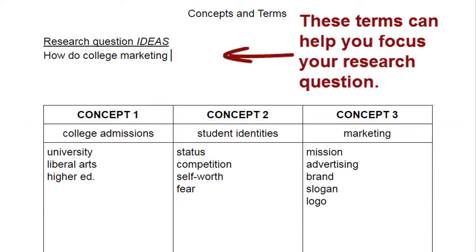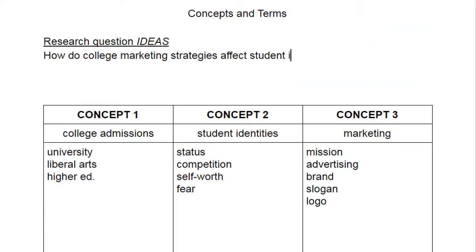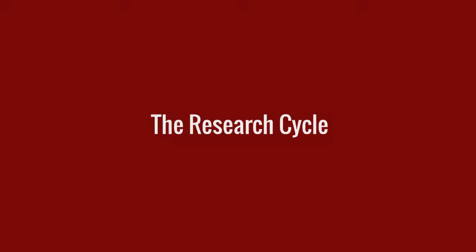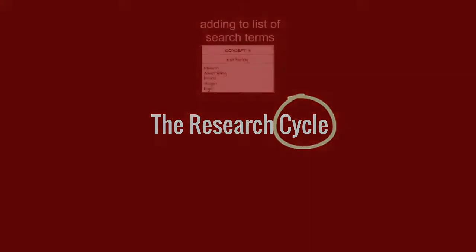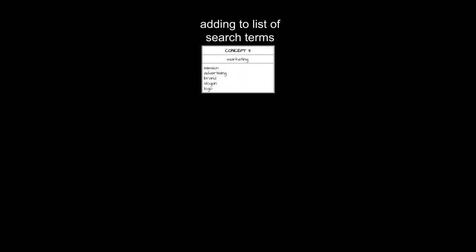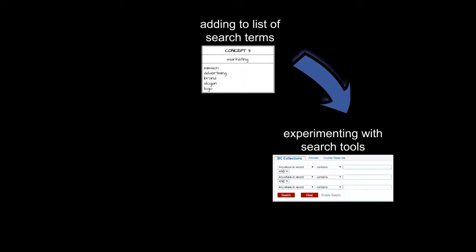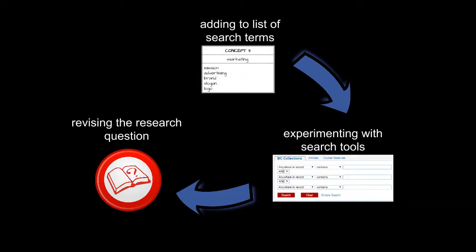This kind of exploration is part of the research process, and it's cyclical, not linear. You'll move back and forth between your list of terms, research tools, and your research question.